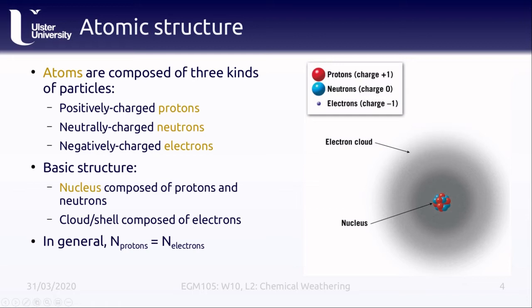Protons and neutrons hang out in the small dense center of the atom where most of the mass is — this is called the nucleus. Protons and neutrons have nearly the same mass. Orbiting around this nucleus is what's called the electron cloud or electron shell, where the electrons are found. Electrons have a mass of about one two-thousandth of protons, but they have an equal charge magnitude as protons, just the polar opposite: protons have a charge of plus one and electrons have a charge of minus one. In general, the number of protons in an atom is equal to the number of electrons.